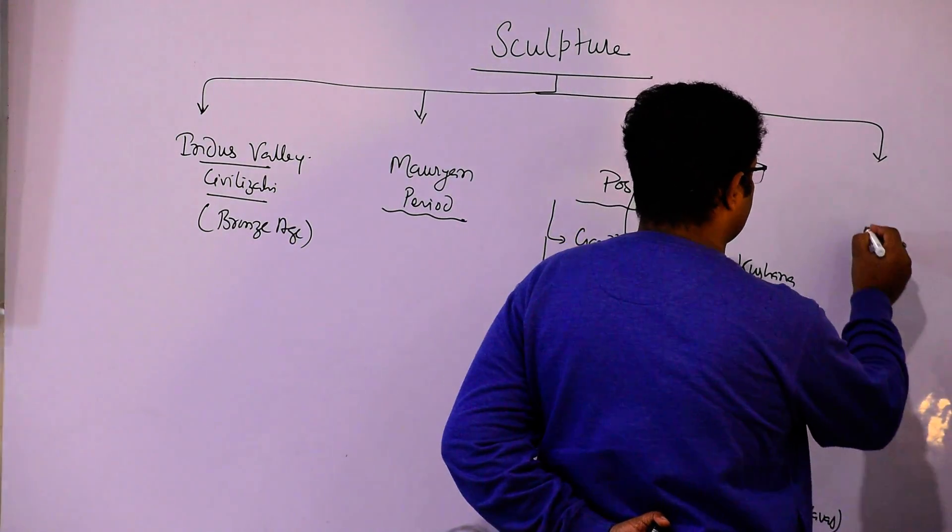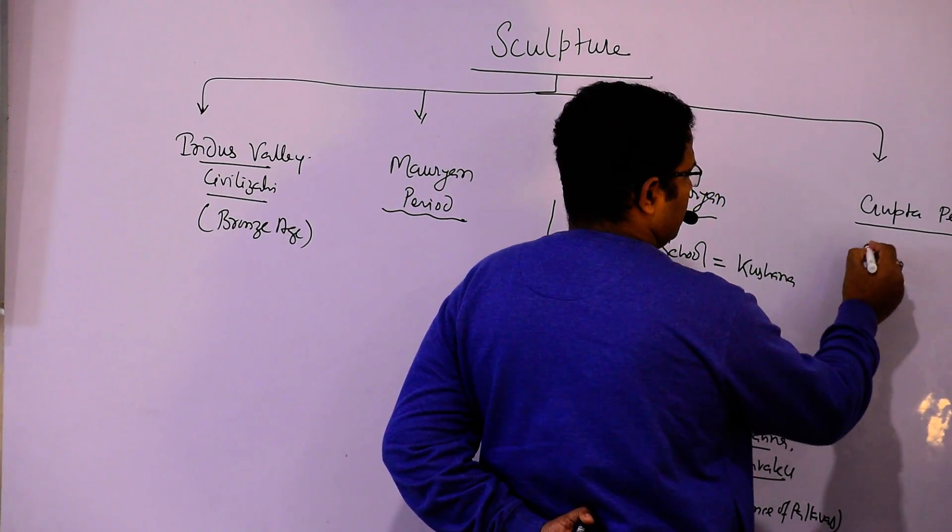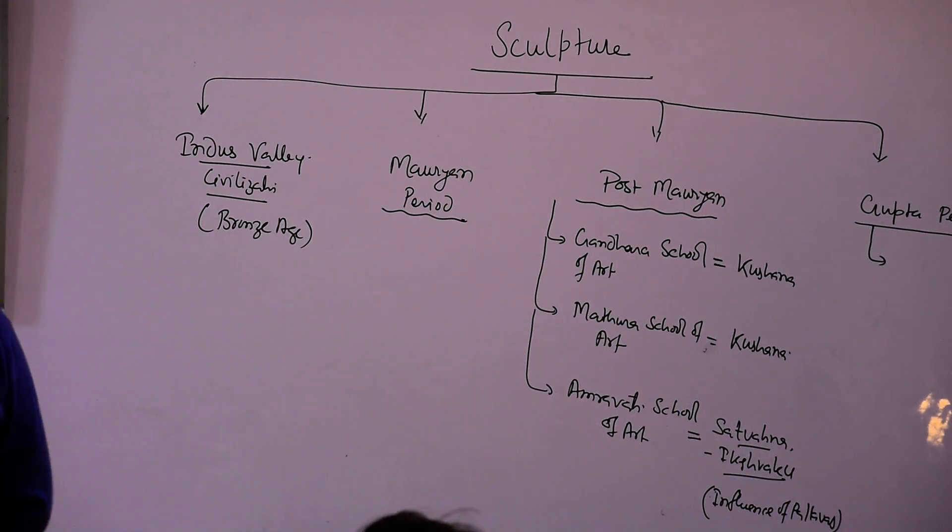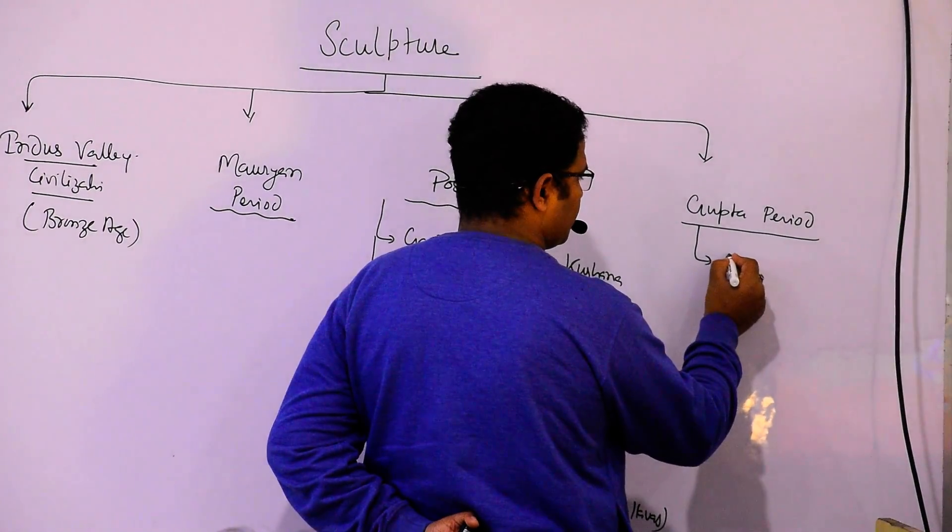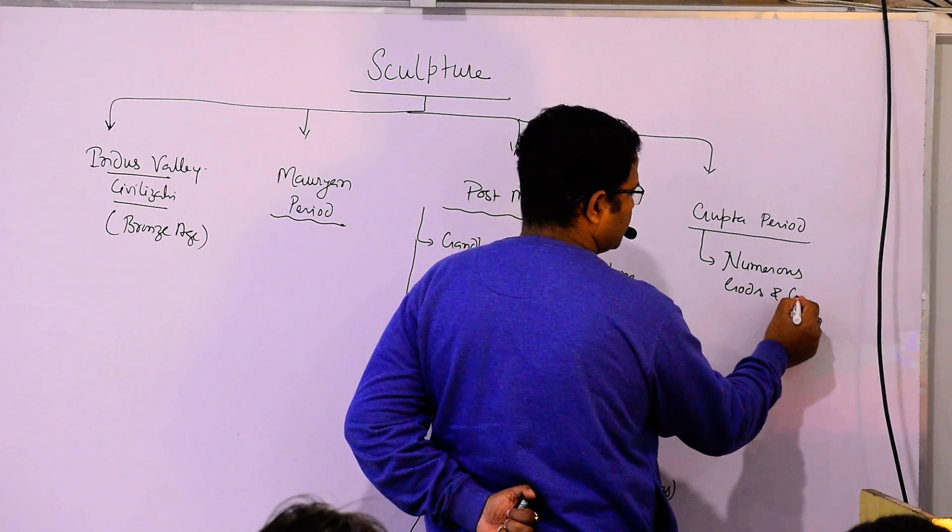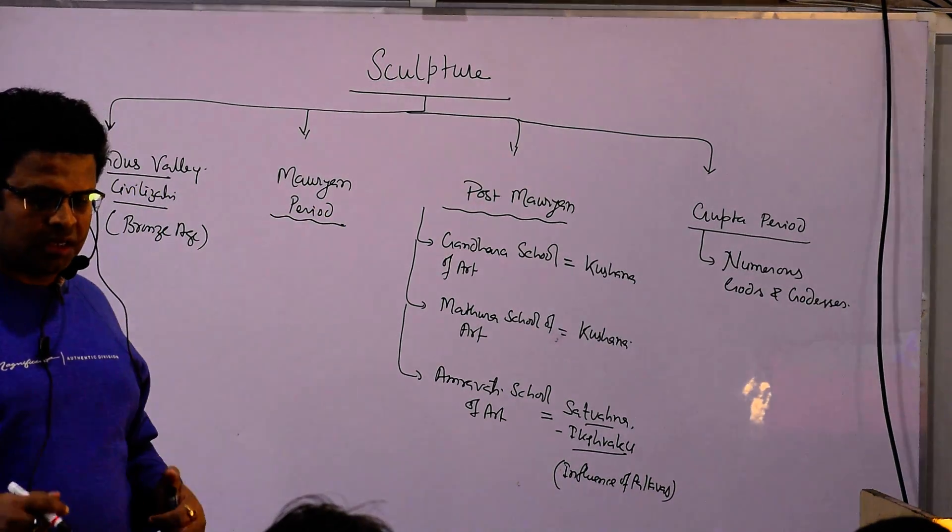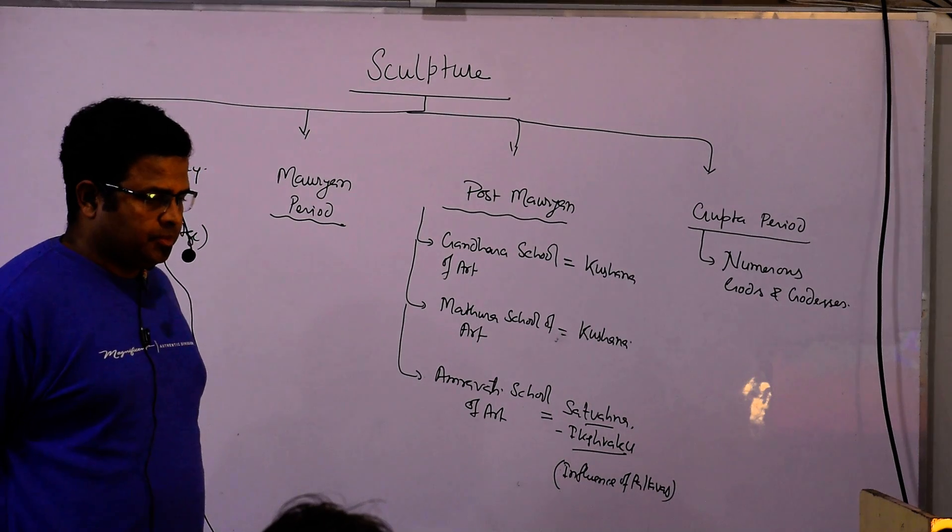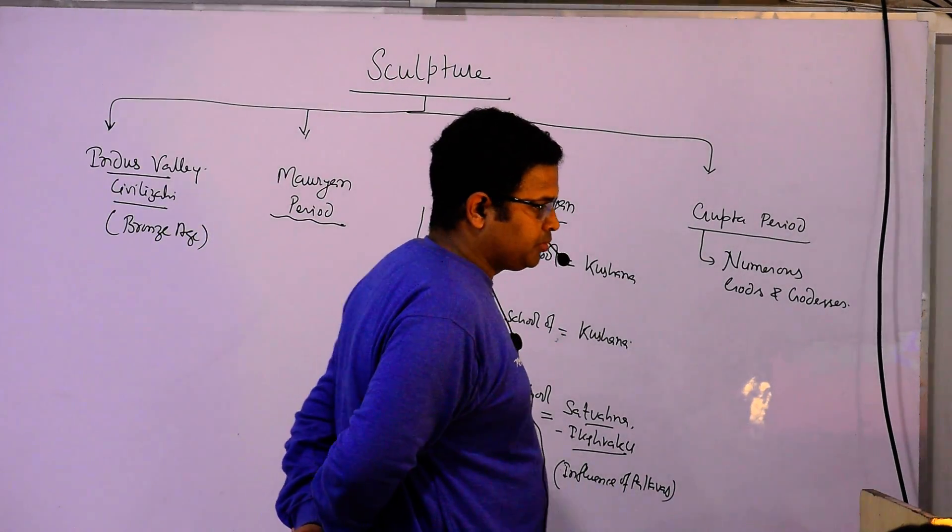And thereafter, there is Gupta period. You know that after the Kushanas, Satavahanas, Sakas, there is a coming of Guptas, 380 to 550 AD. And during that period, we can be able to see numerous gods and goddesses. Their images have been made. After Indus Valley civilization, thereafter Mauryan period, post Mauryan period and Gupta's period.